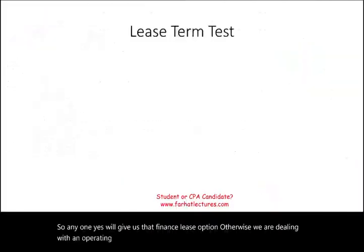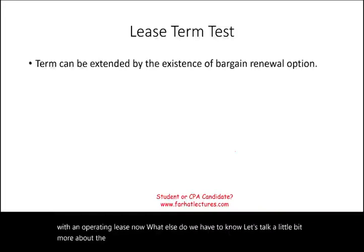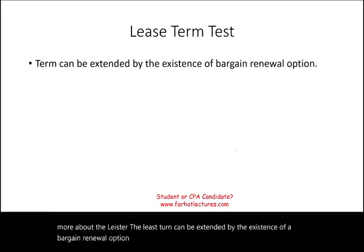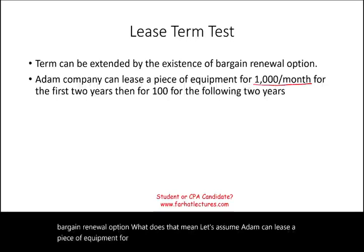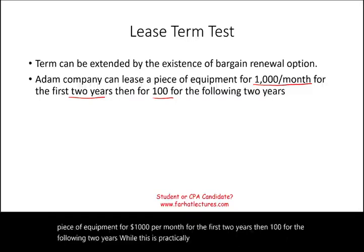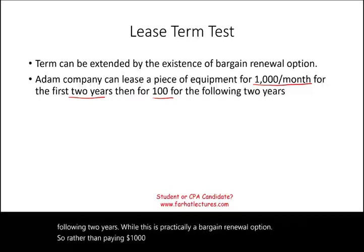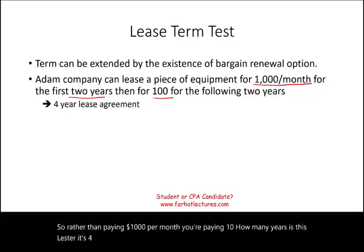The lease term can be extended by the existence of a bargain renewal option. For example, if Adam leases equipment for $1,000 per month for the first two years, then only $100 per month for the following two years, that's practically a bargain renewal option. Rather than paying $1,000, you're paying 10% of that. So the total lease term in this case is four years — you include the bargain renewal period.